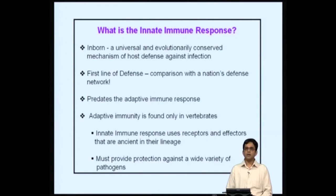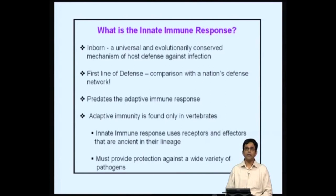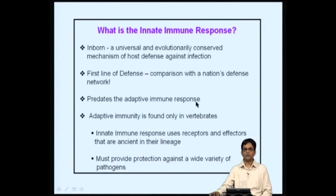The innate immune response predates the adaptive immune response — it is evolutionarily conserved and present in lower organisms, something the adaptive immune response is not. The adaptive immune response is present only in vertebrates. The innate immune response uses receptors and effectors that are ancient in their lineage and must provide protection against a wide variety of pathogens.